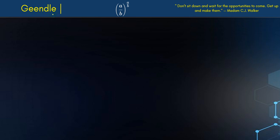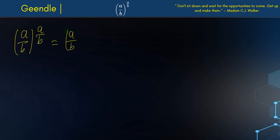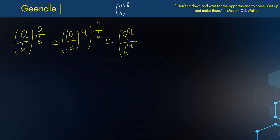Hello guys, welcome to the channel. Today we're going to be simplifying this expression: a over b to the power of a over b. I'm going to write this as a over b, all to the power of a, multiplied by 1 over b. This comes to be a to the a over b to the a.